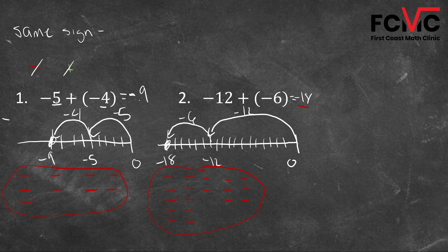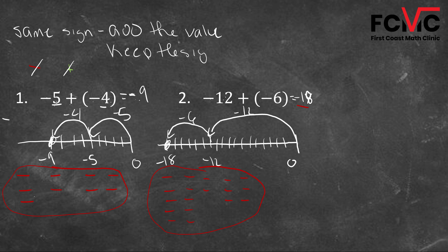None of them cancel out, so we've got 18 total negatives. Our rule: we're adding our values — five plus four, 12 plus six — and then we keep our sign. So negative five plus negative four: add five and four, keep the negative sign. Negative 12 plus negative six: add 12 and six, get 18, and keep the negative sign.